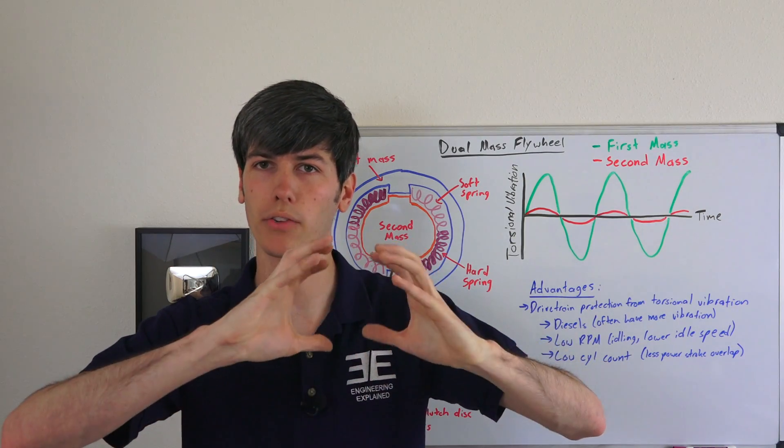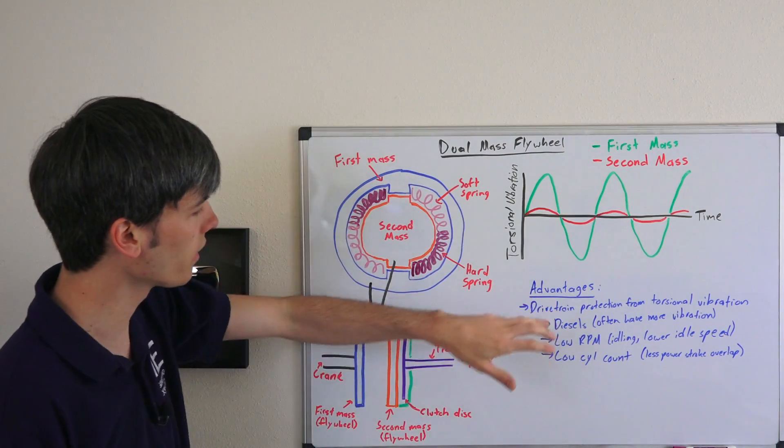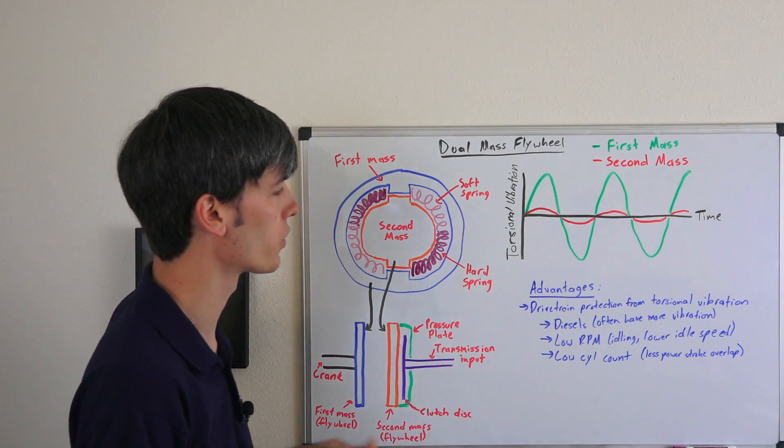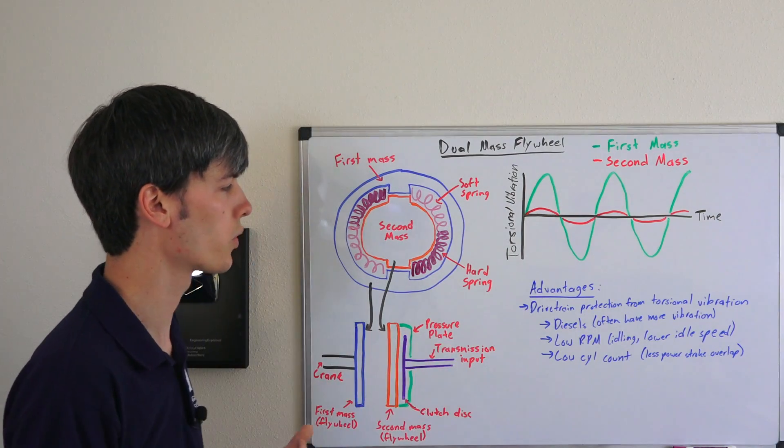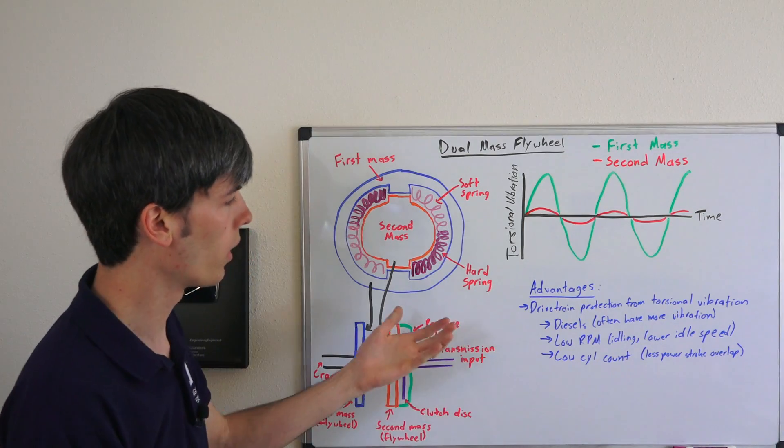Of course, this is all happening while it's rotating, but that's essentially what it's going to look like. The reason this is done is to prevent torsional vibration from reaching the drivetrain. So what are some scenarios in which you would want to do this?